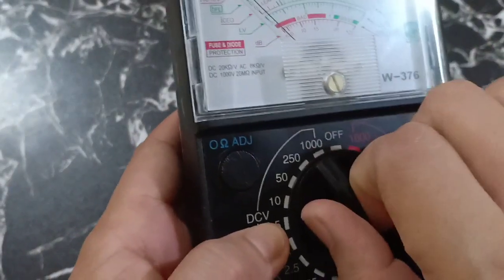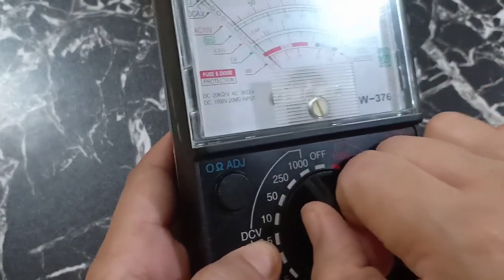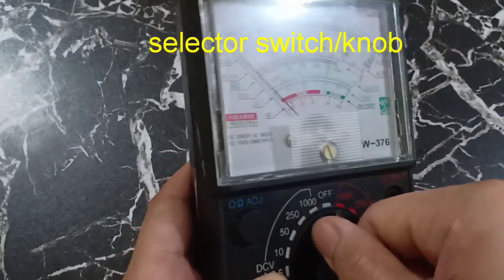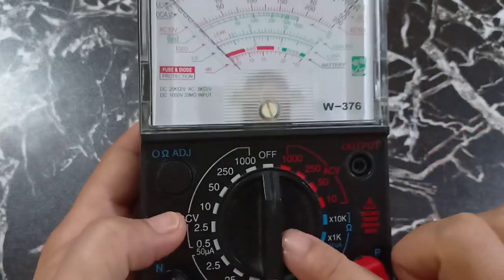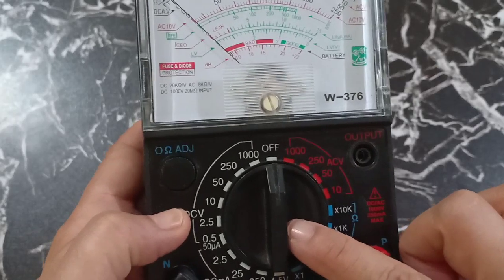This one here is called the selector switch or the selector knob. We can select the setting that we're going to measure.